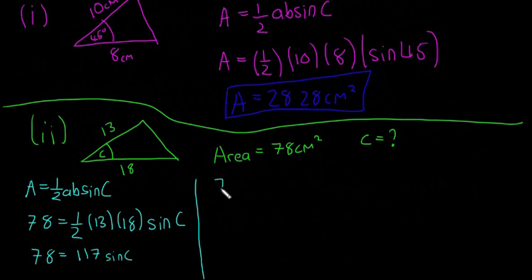So it's going to be 78 over 117 is equal to sine C. I'm just going to rewrite that. Sine C is equal to 78 over 117.